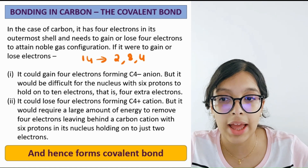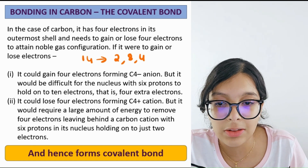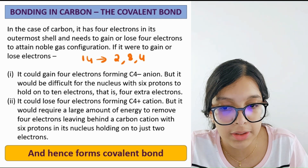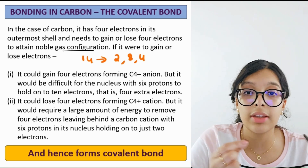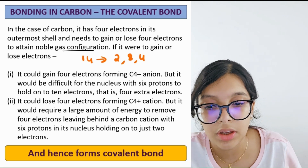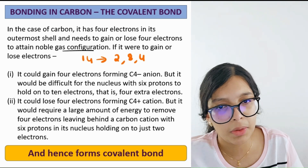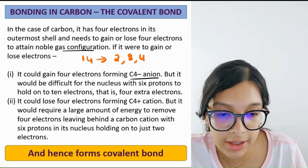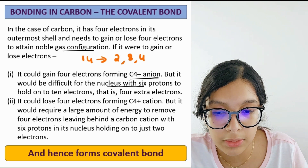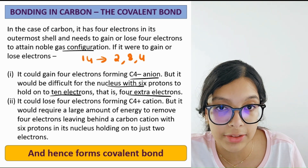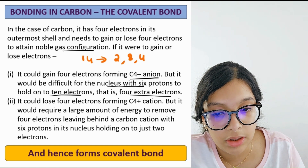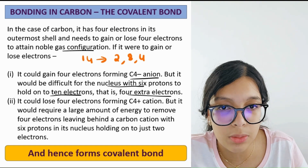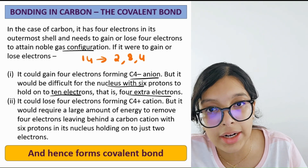In the case of carbon, it has four electrons in its outermost shell and needs to gain or lose four electrons to attain noble gas configuration. If it gains four electrons forming a C4- ion, it will be difficult for the nucleus with six protons to hold ten electrons — that is four extra electrons — and it's really hard for the nucleus to hold that many.